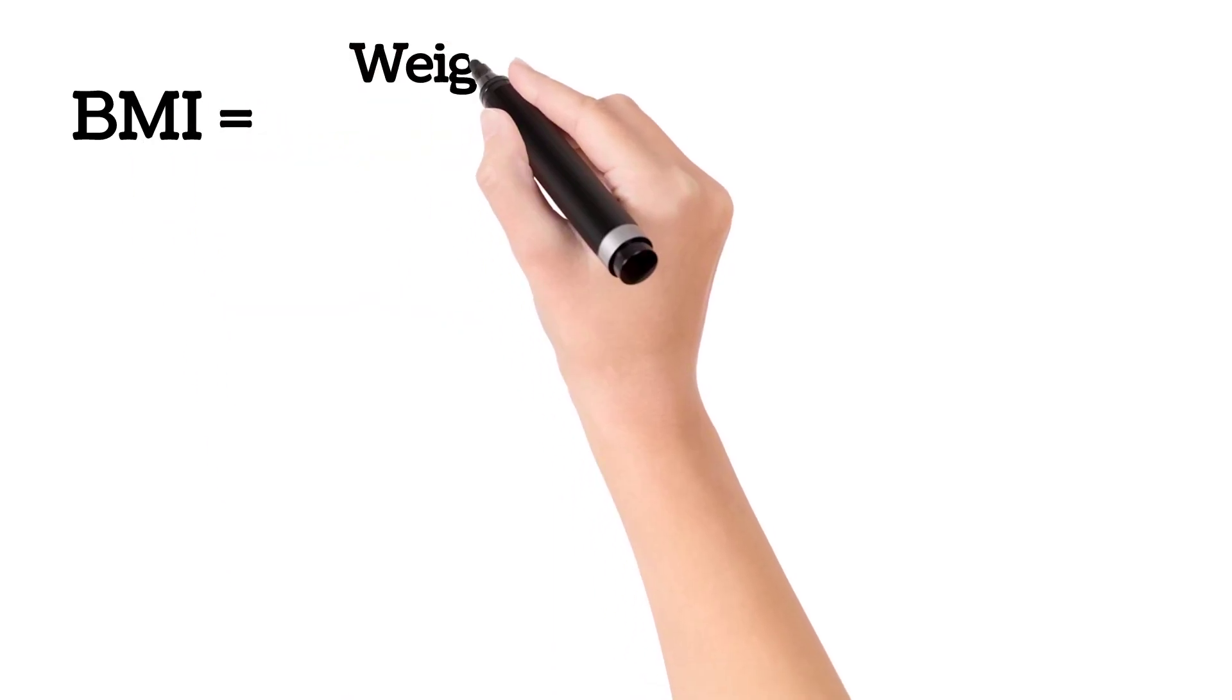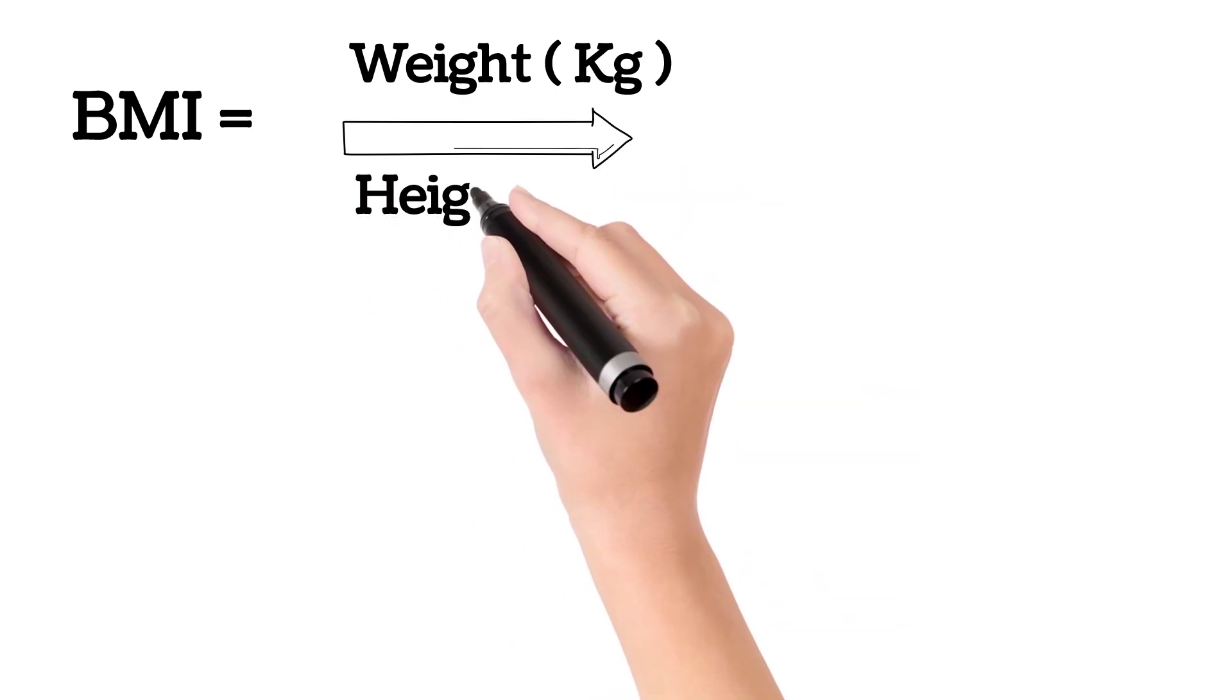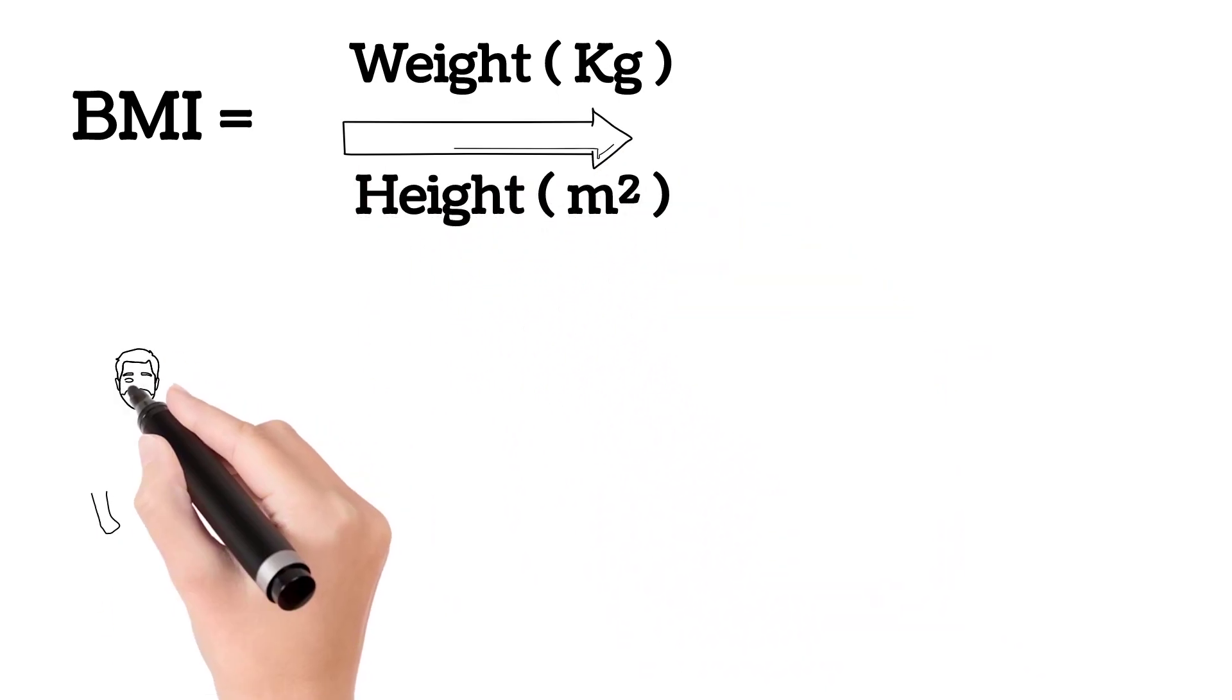That is, BMI is equal to weight in kgs divided by height meter square.